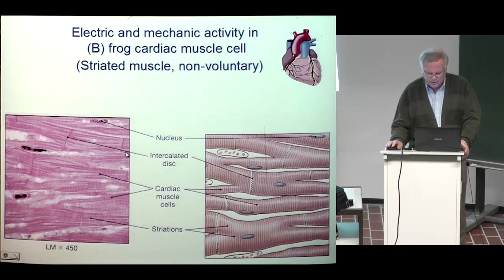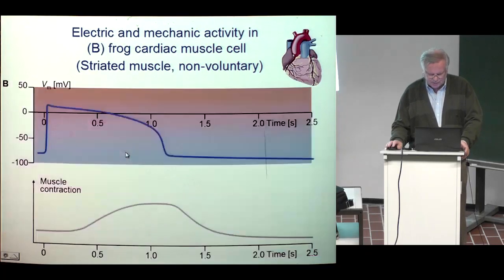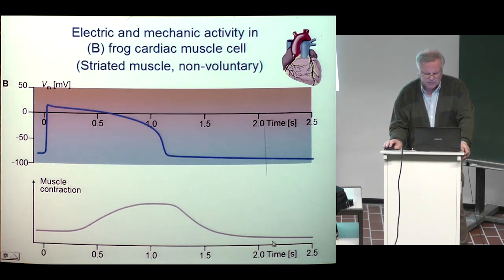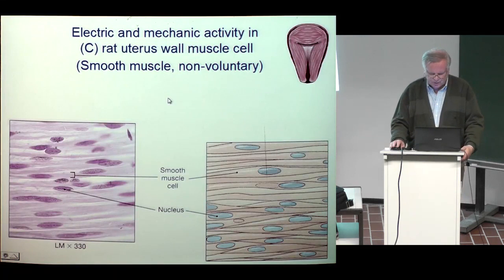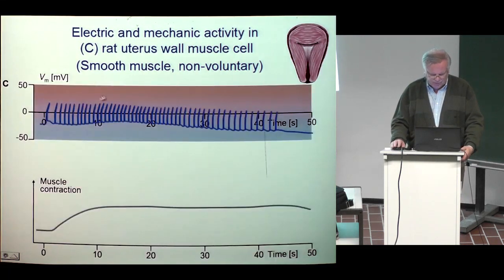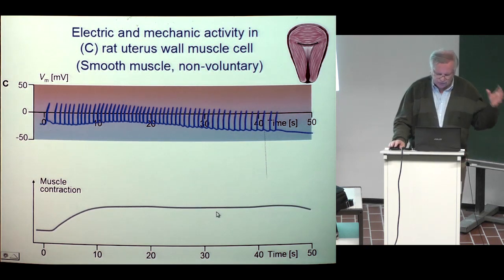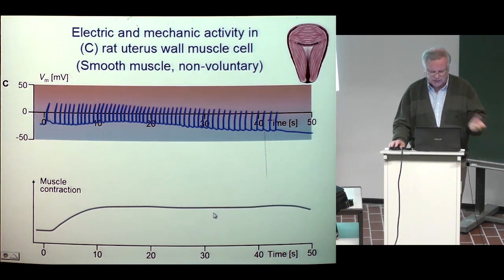Here is a cardiac muscle. The time scale is now two seconds, so about one second is the depolarization time. After depolarization the muscle contracts, and after repolarization it relaxes. In the human heart this time is shorter — less than one second. Here is a smooth muscle, which is non-voluntary. The electric activation is very slow — here the time scale is about 40 to 50 seconds — and the muscle contraction is very slow. So that is the difference in timing between skeletal muscle, cardiac muscle, and smooth muscle.